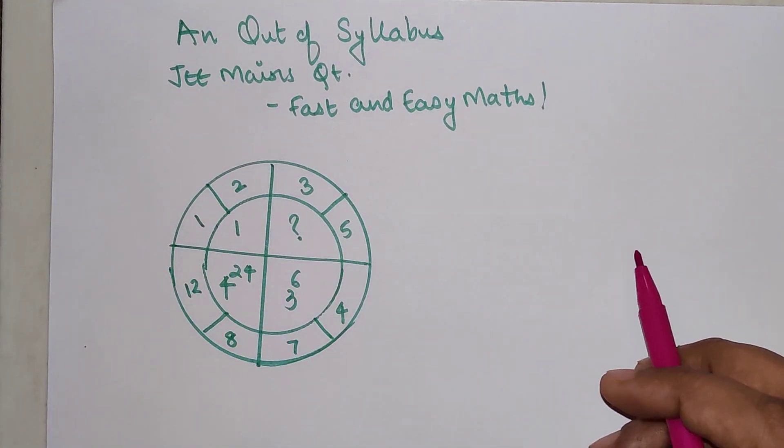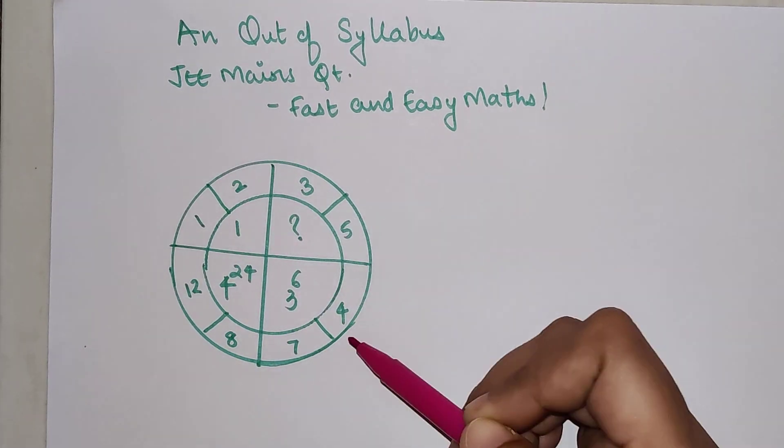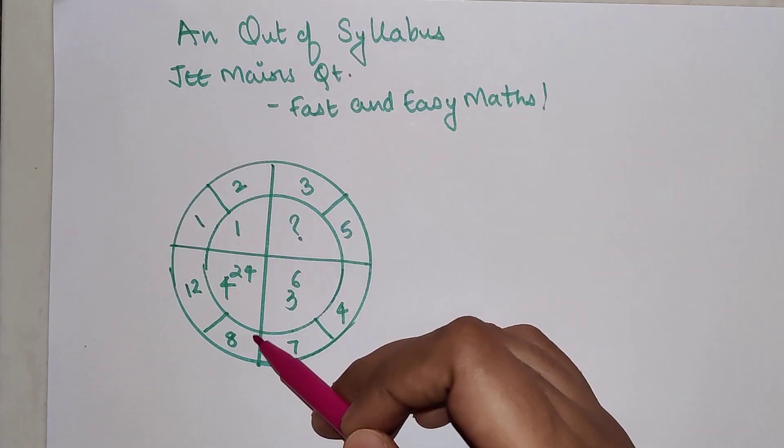So let's see how we can solve this question. So the question over here is 1, 2, 3, 5, 4, 7, 8, 10, 12 and then in the inner circle we have 1, 4, 3.